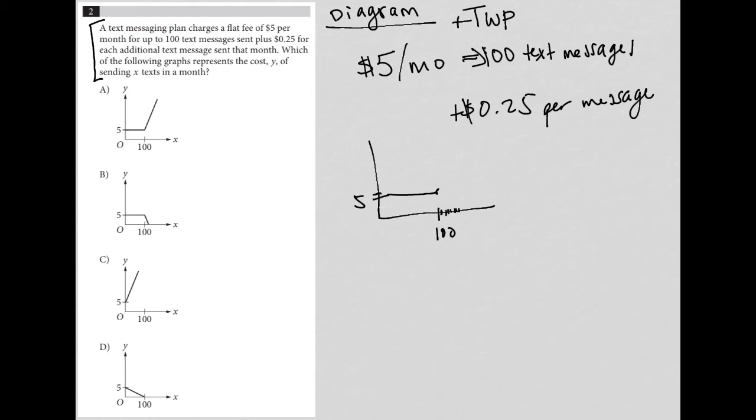So the further away I get from 100, each time, the cost is going up by 25 cents. So which one of the graphs matches that information?